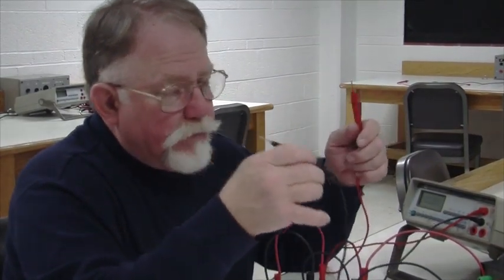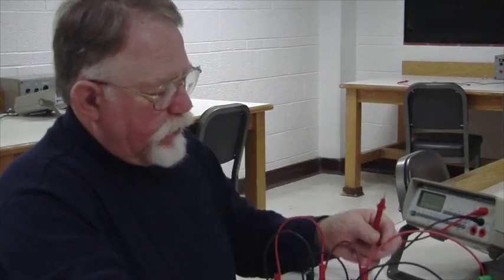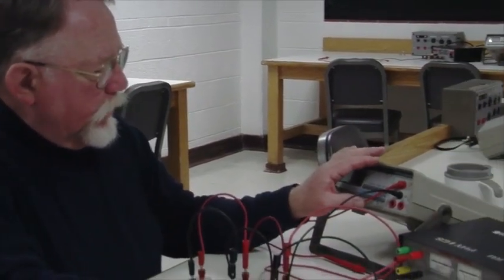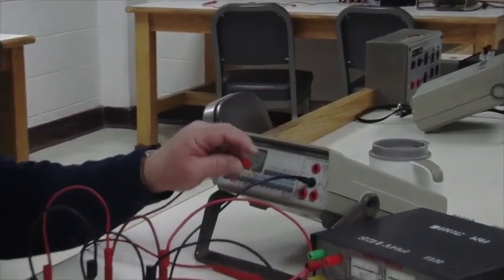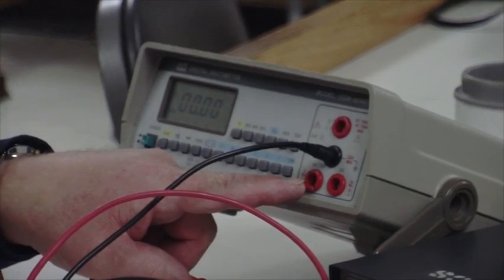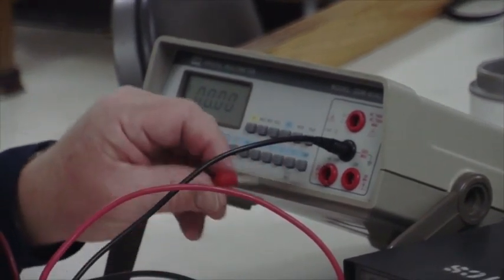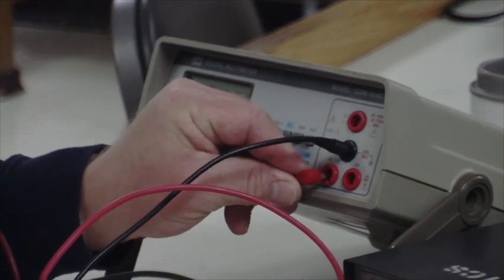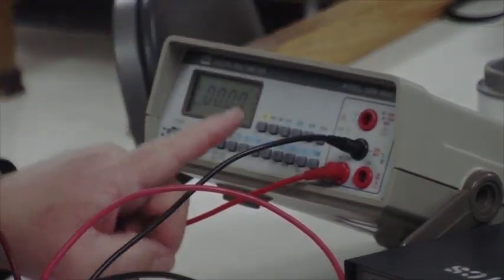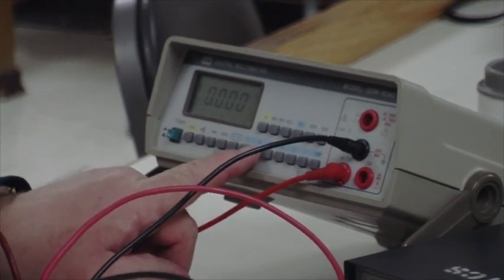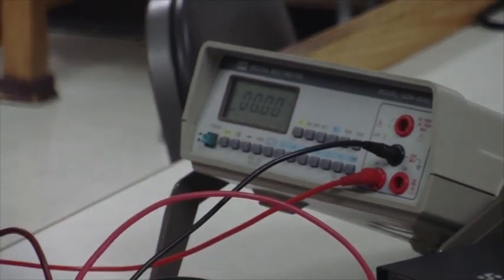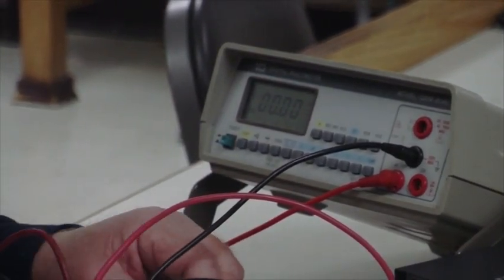Now when it comes to measuring current, the situation is completely different. In order to measure current, instead of using this input, we're going to use this input down here, which is the one that says milliamps. So let's plug that in there. And we'll push the milliamps button. And again, I'll select the scale. It gives me two decimal places.